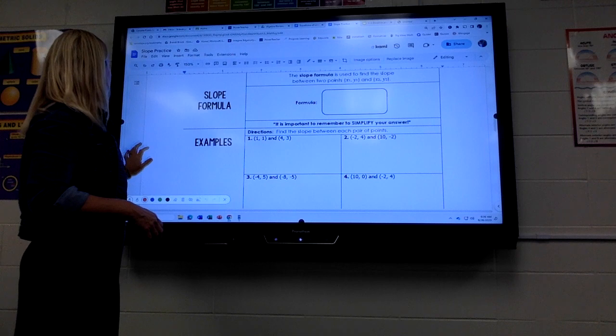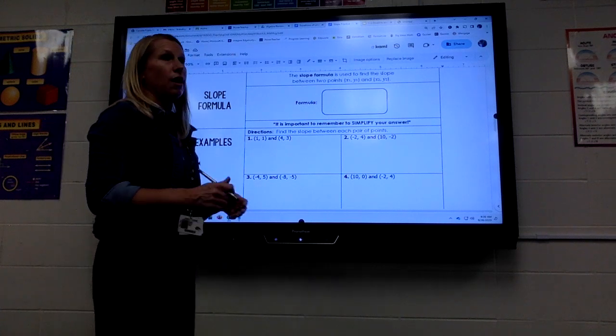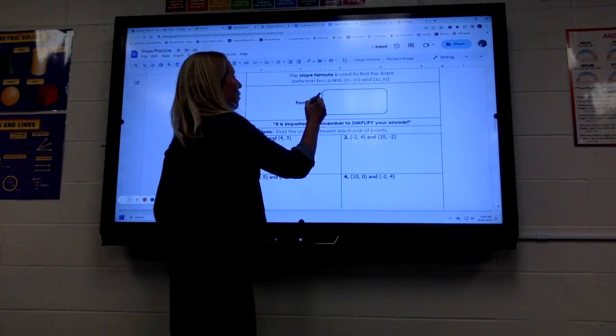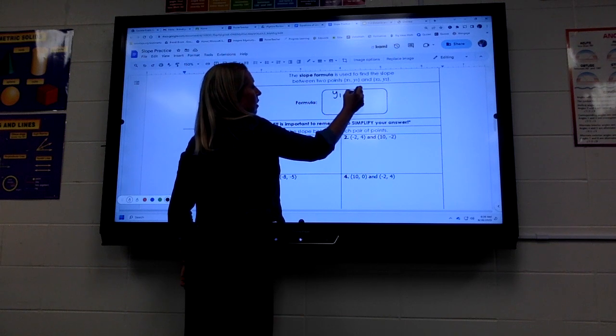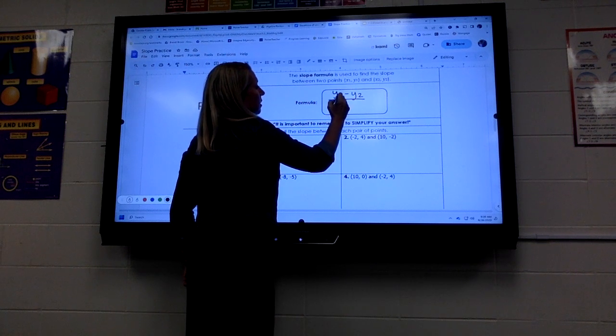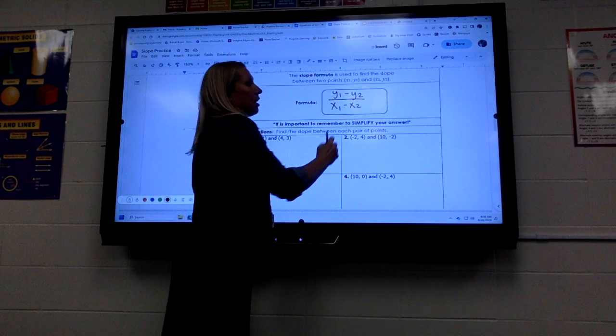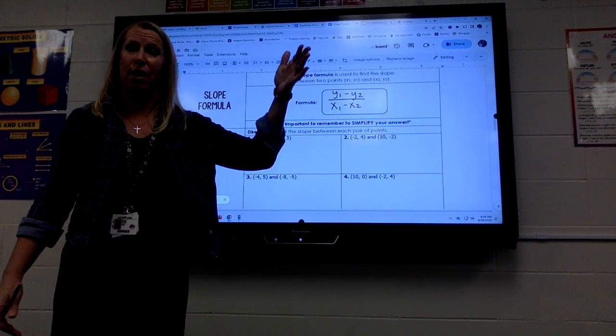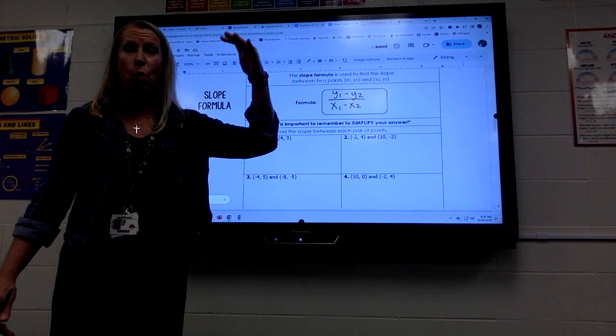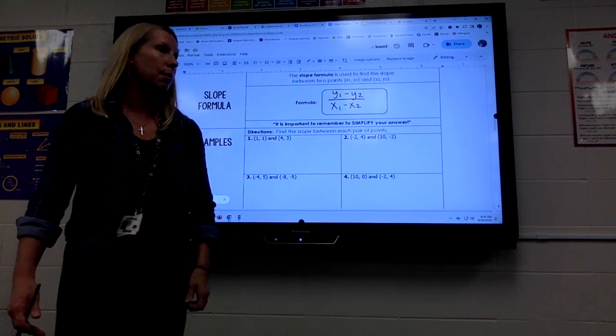Okay, second section, slope formula. So you will need to write this down. So we always subtract the y's on the top and the x's on the bottom. Very important. I remember that y's rhymes with rise, and we can remember rise over run. So we subtract the y's on top and the x's on bottom.